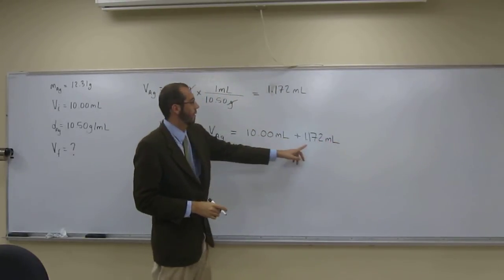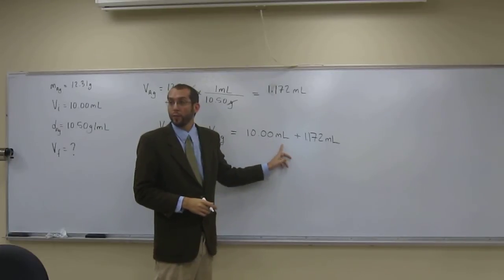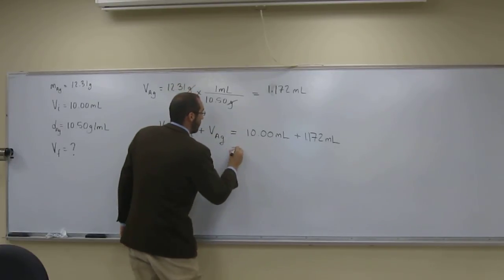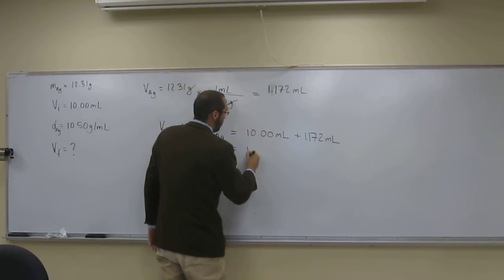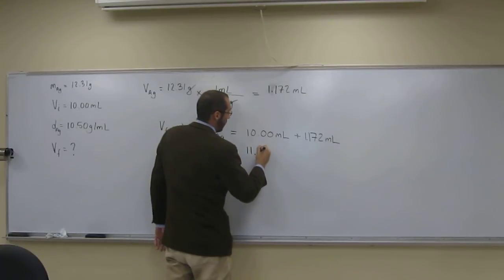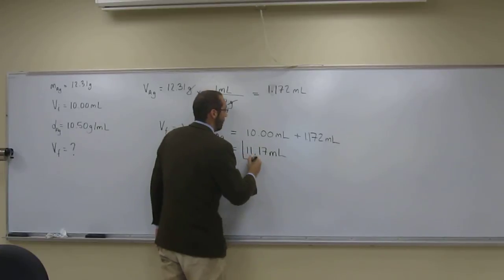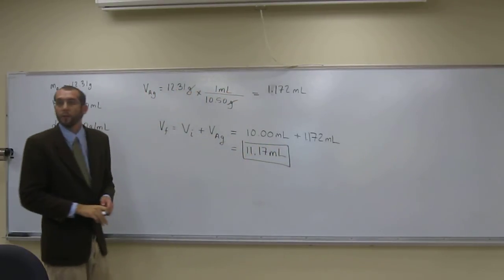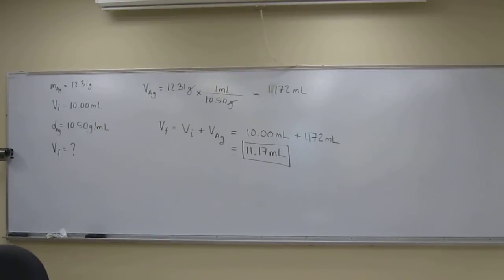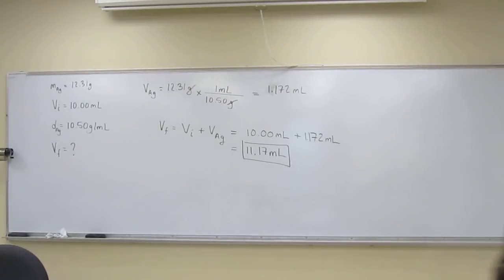So this is going to go to two digits after the decimal point. So it's going to be, just in my head, 11.17 mils. That's going to be the final volume of the graduated cylinder. So make sure you're getting the number that's above 11 in these ones. Are there any questions on this one? No. Wonderful.